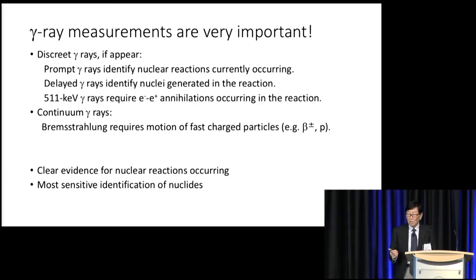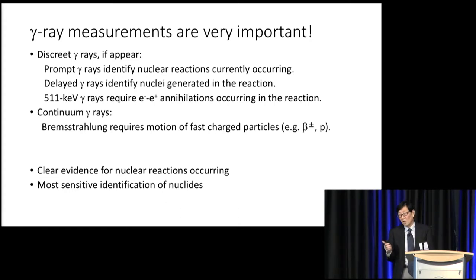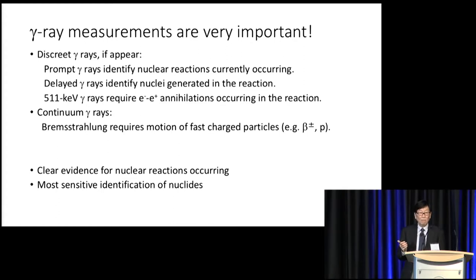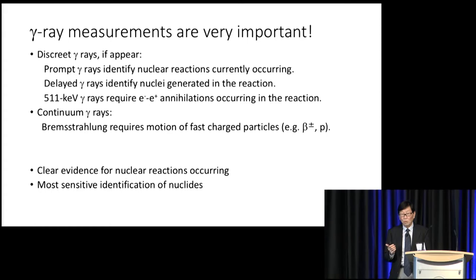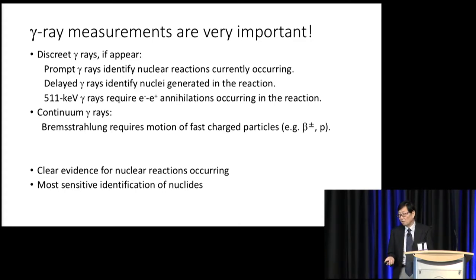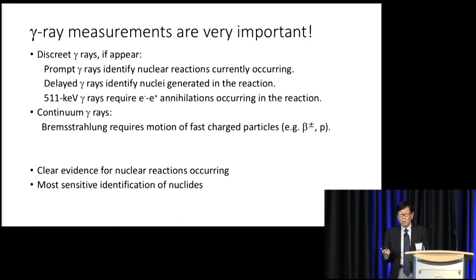Gamma ray measurements are very important. If there are discrete gamma rays, we can specify the nuclear reaction which is currently occurring. And also, if there are delayed gamma rays, we can specify the generated nuclei in this reaction. Also, the 511 keV gamma rays require the positron-electron annihilation process, meaning there should be positrons. And also, there should be continuum gamma rays that tell us about the motion of charged particles — for example, electrons, positrons, or protons. Therefore, gamma rays give us clear evidence for nuclear reactions which are currently occurring.